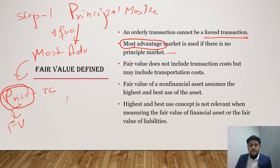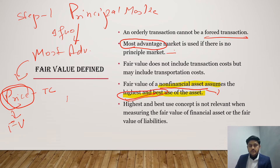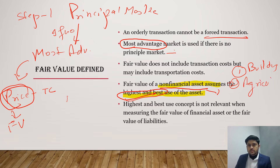Fair value of a non-financial asset assumes the highest and best use of the asset. We always assume fair value of a non-financial asset should be based on its highest and best use. For example, if there is land that can be used to build a building or for agriculture, whichever purpose gives the highest value of that non-financial asset should be considered the fair value.